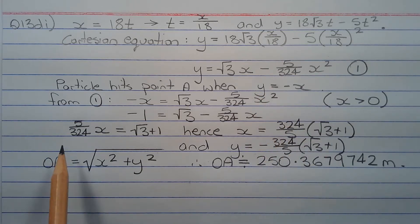So distance OA can be found by applying Pythagoras theorem. That is, OA equals the square root of x squared plus y squared. And substituting these two values for x and y, we get OA is approximately equal to 250.3679742 meters.